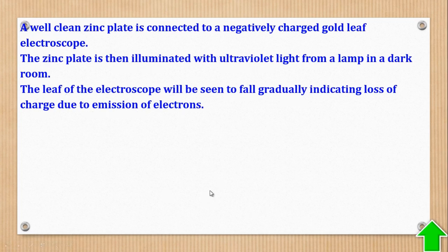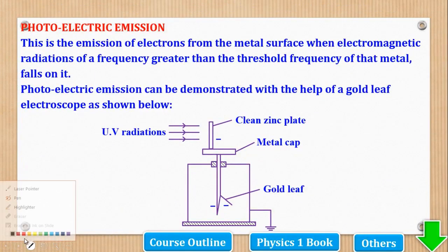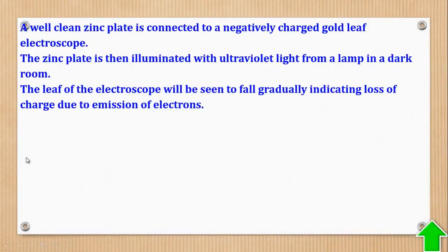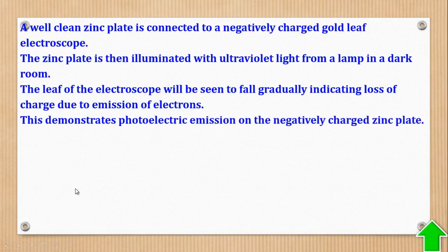In this experiment, a well-clean zinc plate is connected to a negatively charged gold leaf electroscope, so the zinc plate also became negatively charged. The zinc plate is then illuminated with UV light from a lamp in a dark room. The leaf of the electroscope will be seen to fall gradually, indicating loss of charge due to emission of electrons. This fall of the gold leaf is what demonstrates the presence of photoelectric emission.